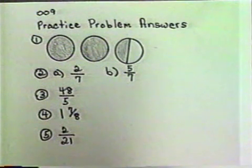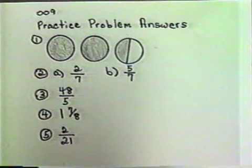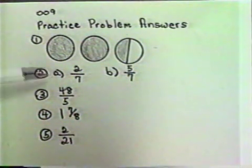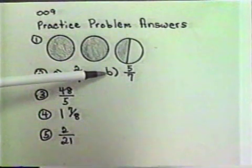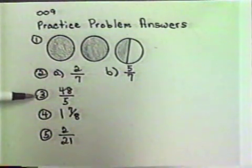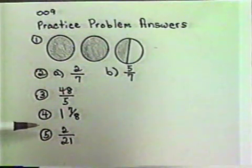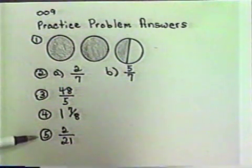Here are the answers to the practice problems. The first one is the picture. Number two, part A is two-sevenths; part B is five-sevenths. Number three, forty-eight fifths. Number four, one and seven-eighths.